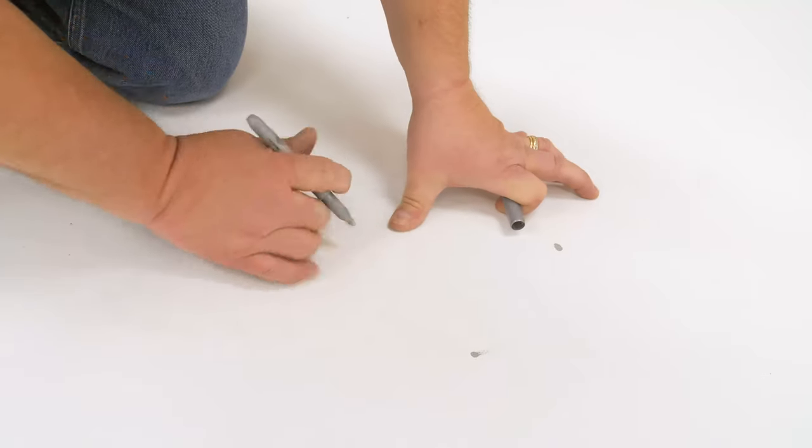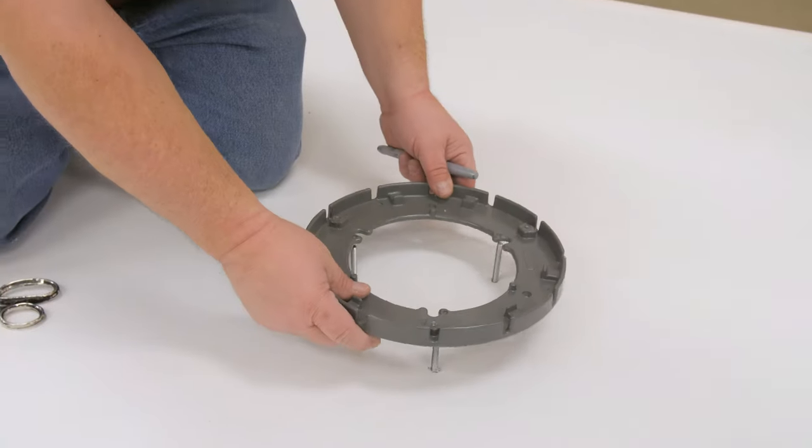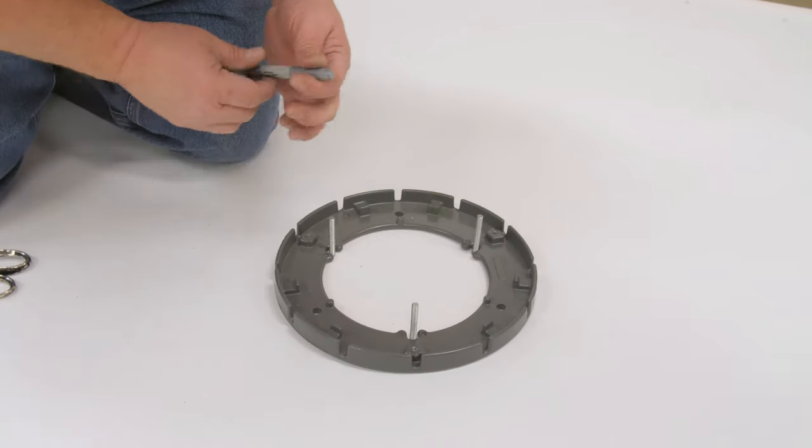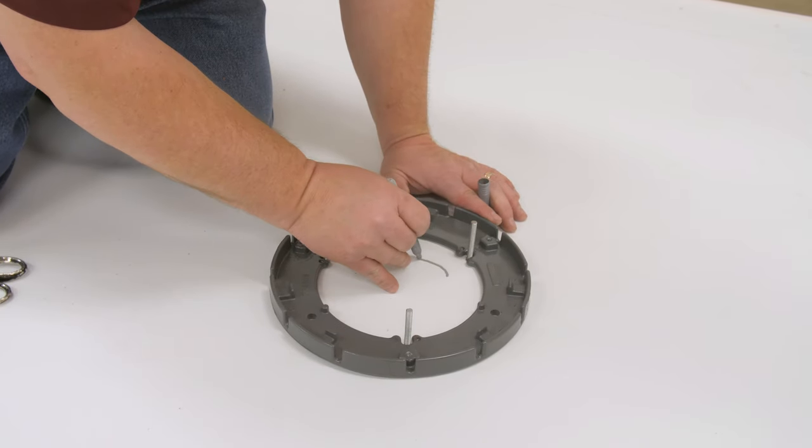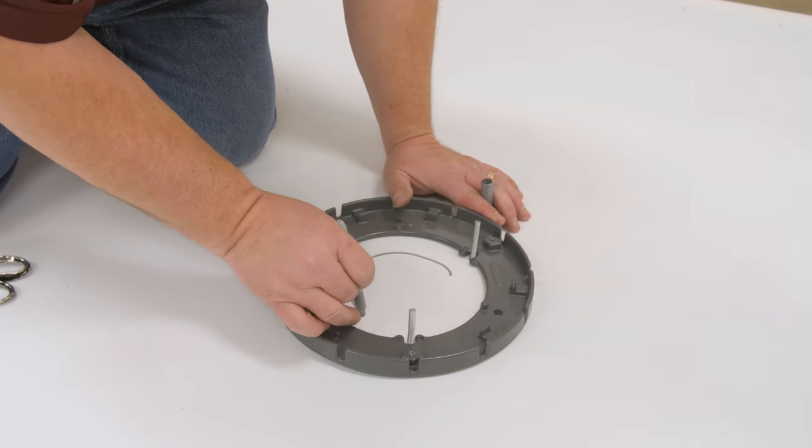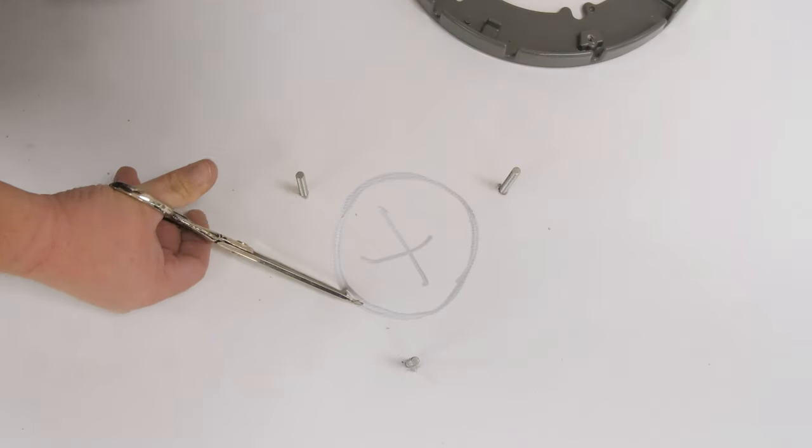Mark the drain bolt locations and center the clamping ring over the bowl on top of the membrane. Align the drain bolt locations in the clamping ring with the marks on the membrane. Mark the opening in the membrane. The opening should be the same size or slightly larger than the drain pipe, but not larger than the inside diameter of the clamping ring.